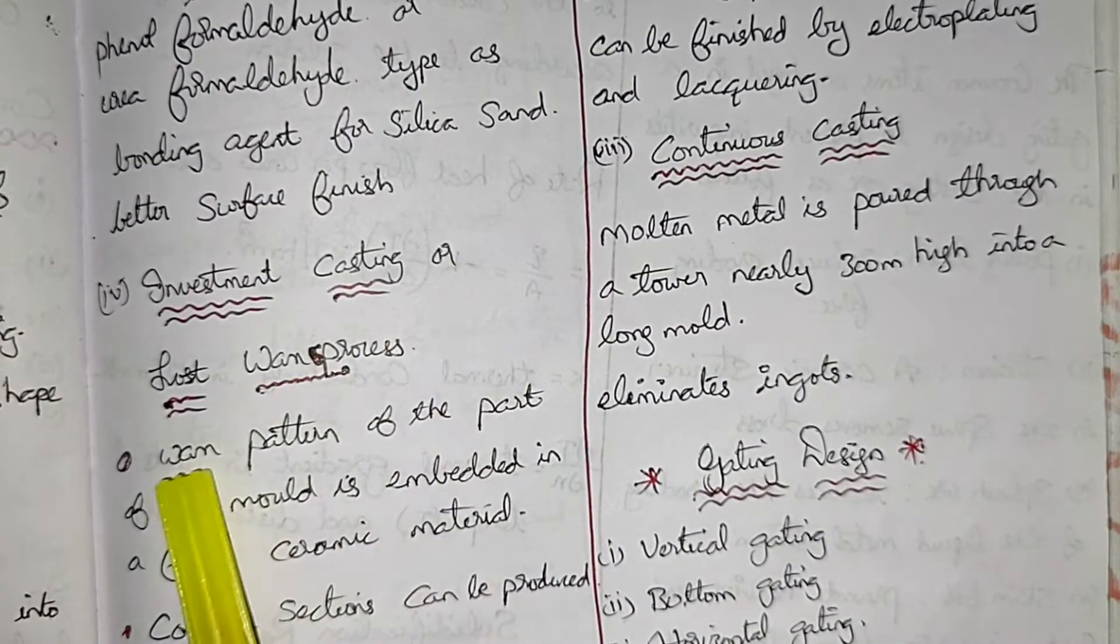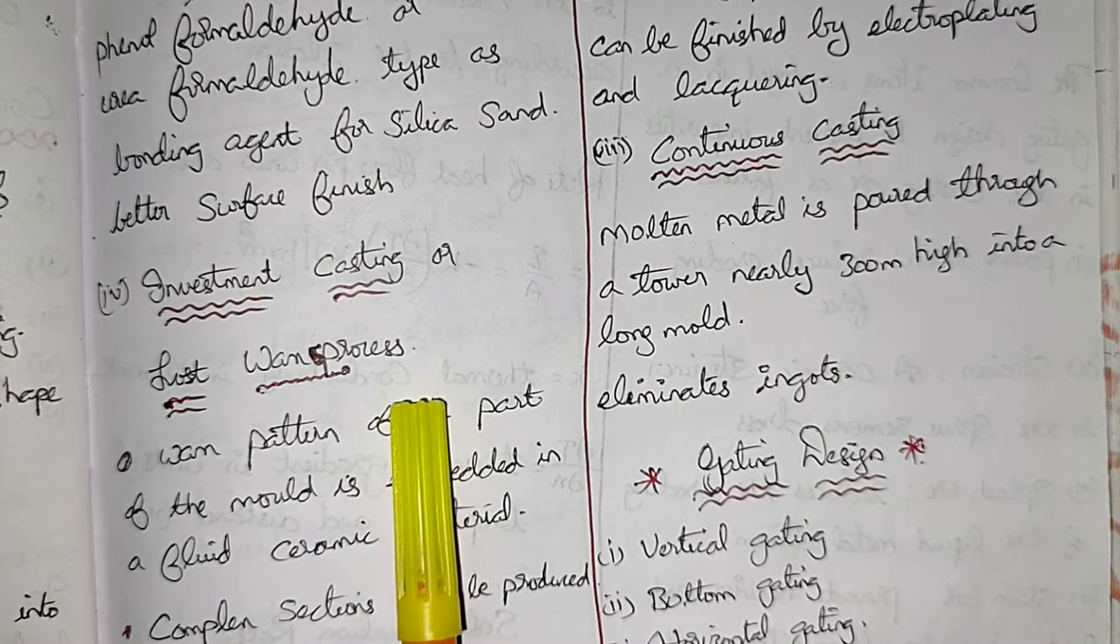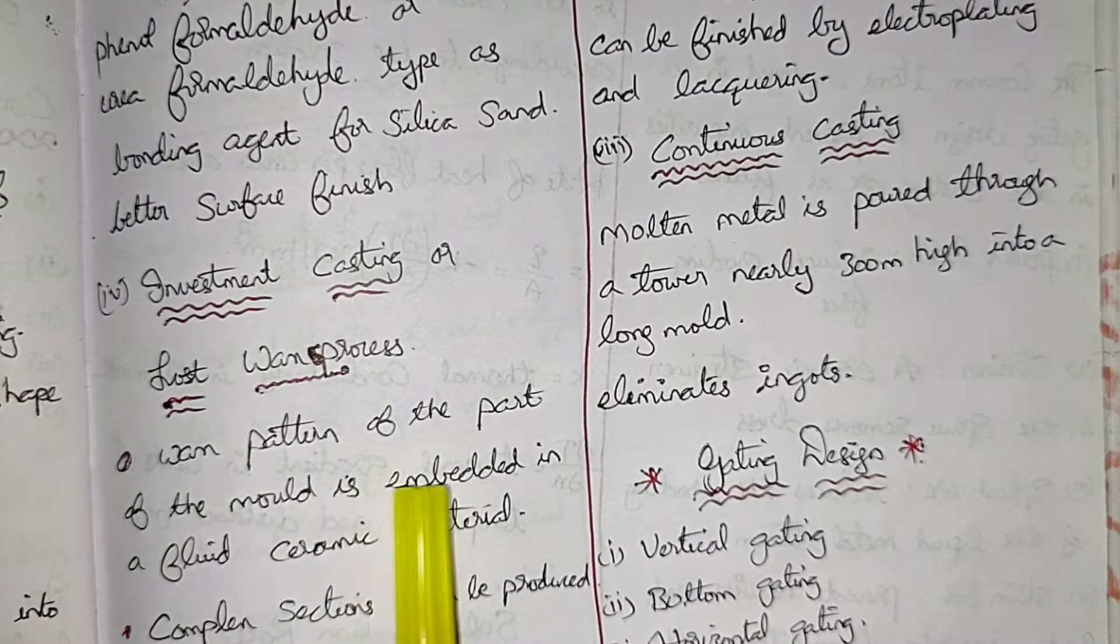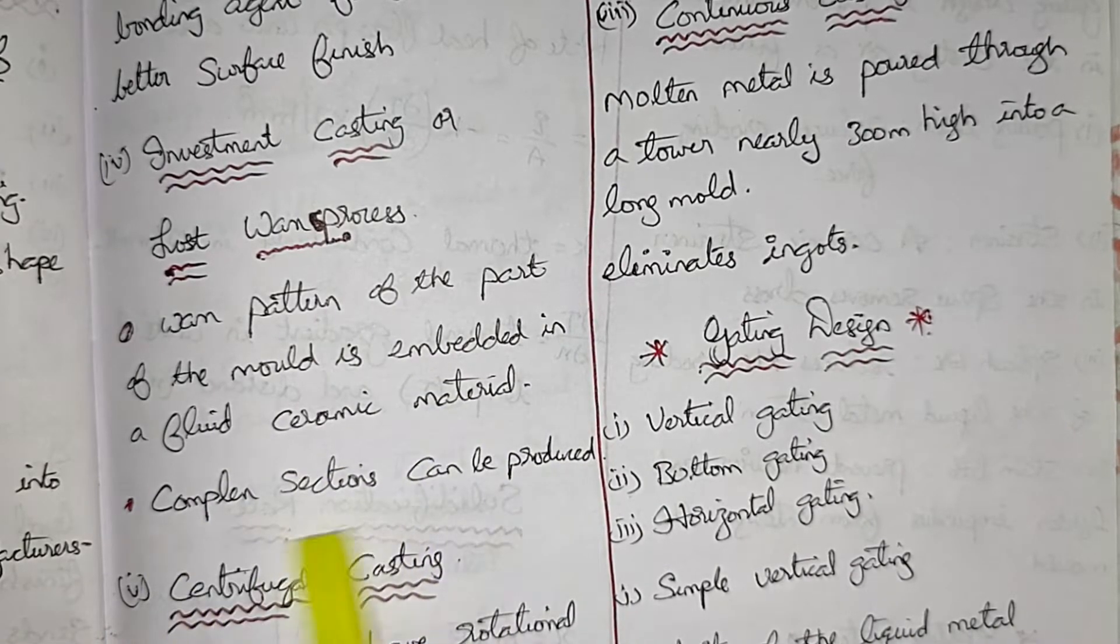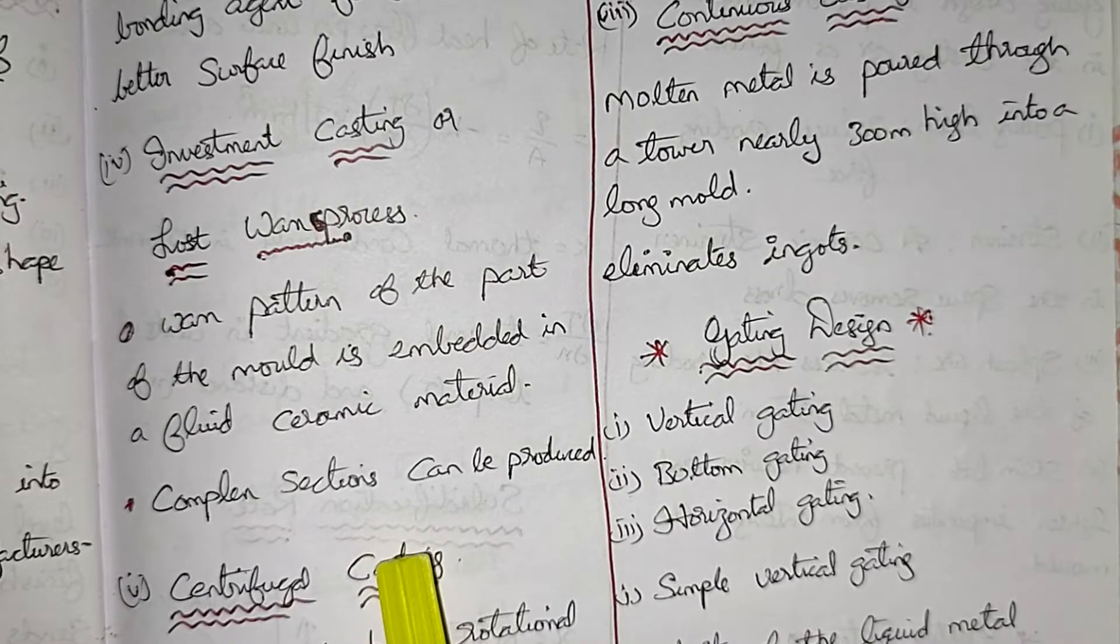Investment casting or lost wax process. A wax pattern of the part of the mold is embedded in a fluid ceramic material. Complex sections can be produced.